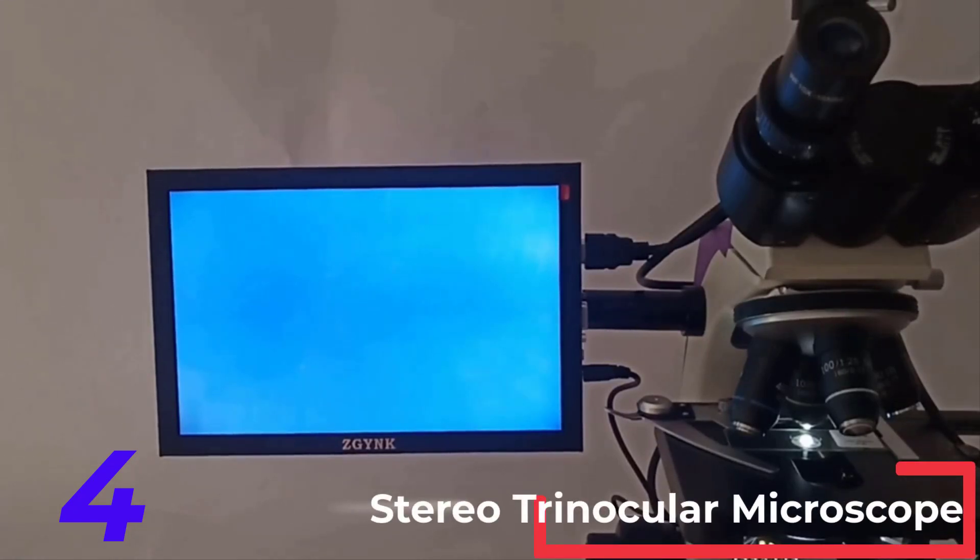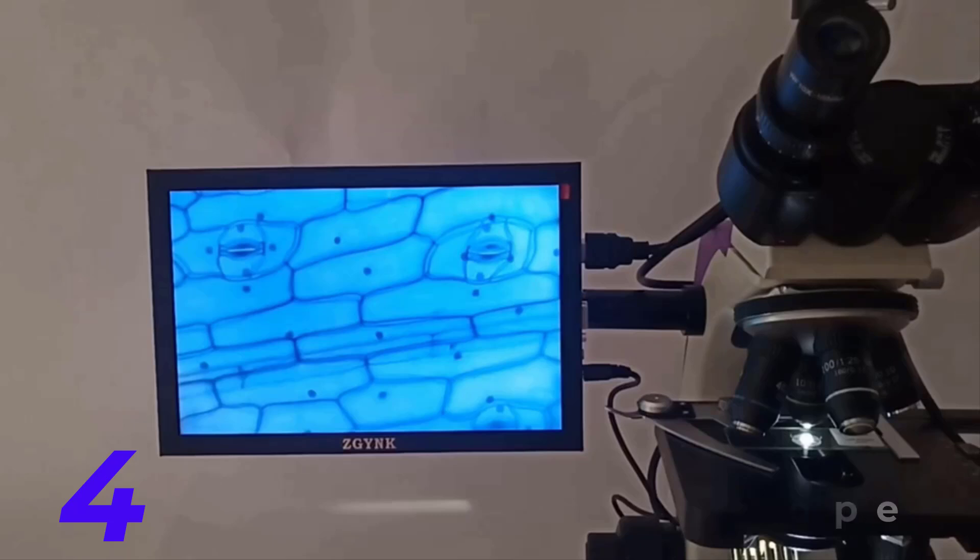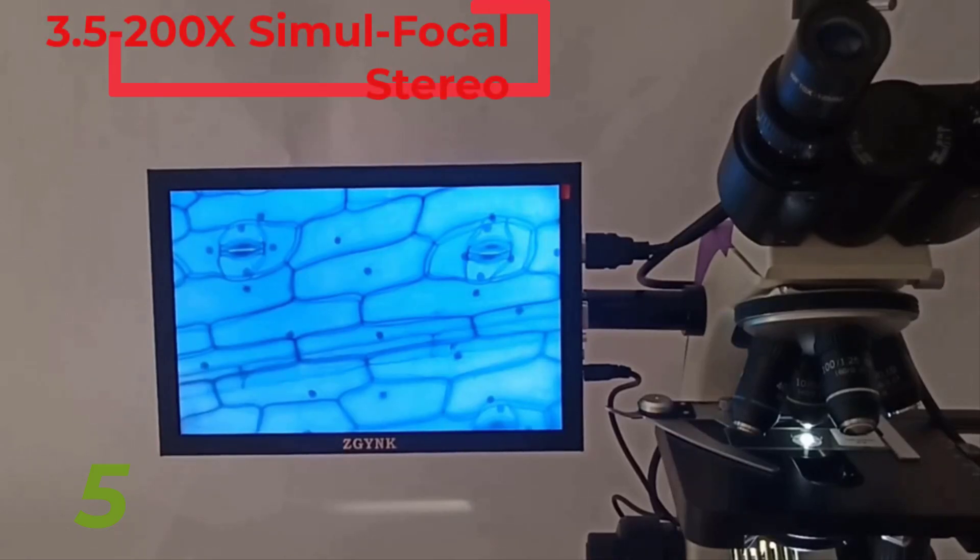AmScope 7x-50x simul-focal trinocular continuous zoom stereo microscope head. Overview: the AmScope 7x-50x simul-focal trinocular continuous zoom stereo microscope head offers high quality optics, continuous zoom and a simul-focal photo port. This design allows for simultaneous use of the eyepieces and a camera making it ideal for applications requiring constant video feed or frequent snapshots.